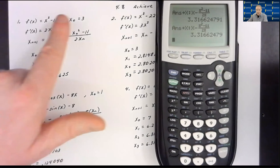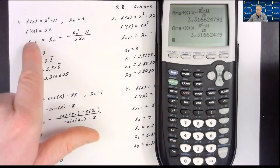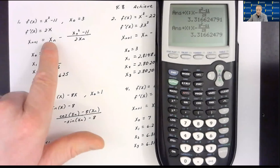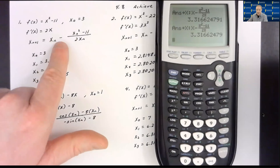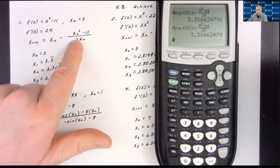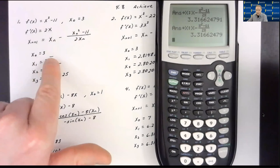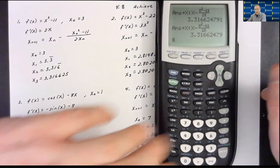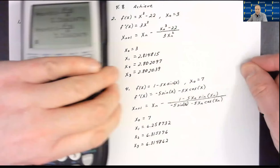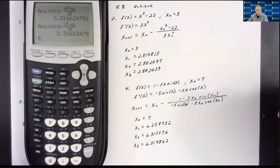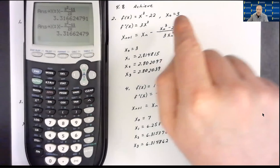Newton's method: take the original guess, plug it into the recursive formula — that guess minus the function evaluated at that guess divided by the derivative evaluated at that guess — and it will converge to an answer in most cases. In all the problems Achieve gives us it converges, though I did show in the notes cases where Newton's method can fail.